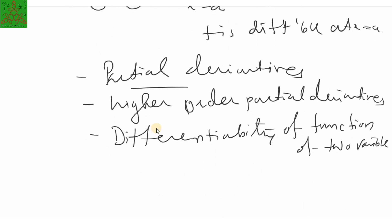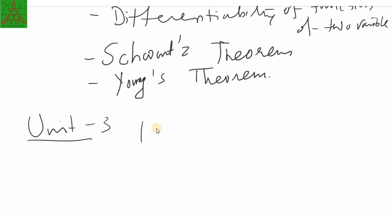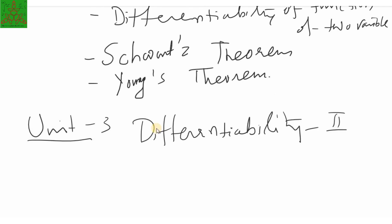We will talk about some important theorems on differentiability — one is called Schwarz's theorem and another is Young's theorem — both related to mixed derivatives. Unit 3 is also based on differentiability. In that we discuss differentiable functions of two variables and the chain rule, just as there is a chain rule for functions of one variable, we have a chain rule here as well.